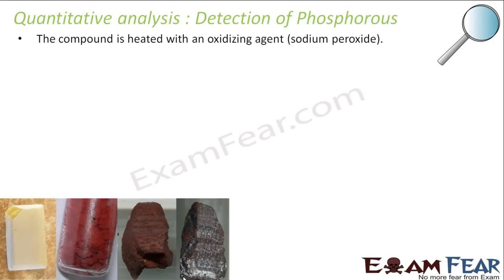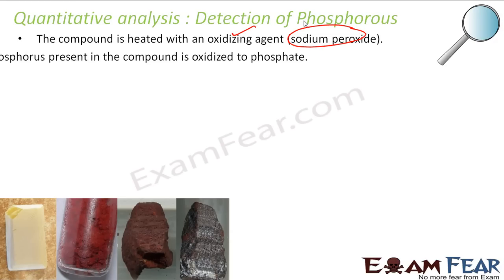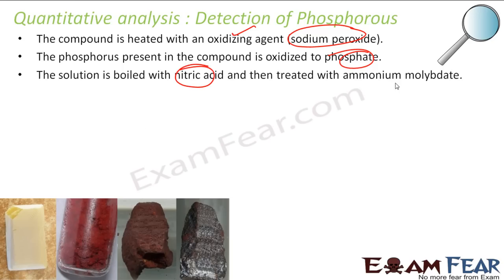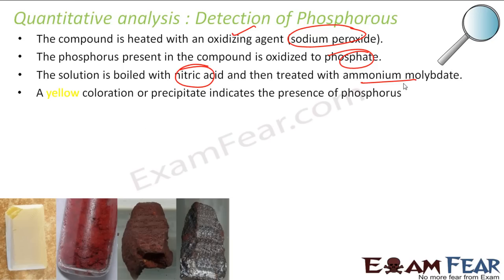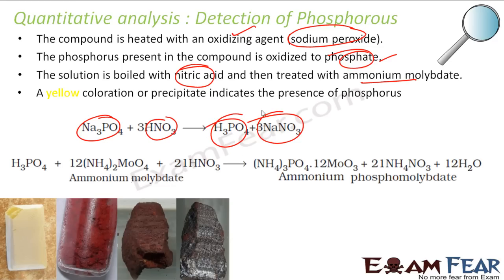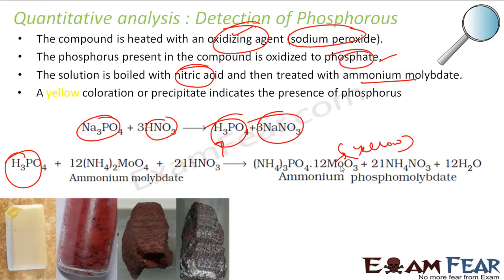Let us understand the detection of phosphorus. The compound is first heated with an oxidizing agent — sodium peroxide — which oxidizes the phosphorus present to phosphate. This phosphate is then boiled with nitric acid to give H₃PO₄ and NaNO₃. When this is treated with ammonium molybdate, a yellow color appears, confirming the presence of phosphorus.